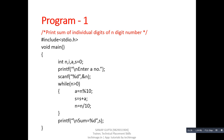Let's understand the while loop with the help of a program. In this slide, the program explained is the sum of individual digits of an n-digit number. The user can enter a number containing any number of digits — for example, 123 contains three digits: 1, 2, 3, and 1234 contains four digits. This program will find the sum of all digits. For example, if the number is 123, the output will be 6, that is 1 plus 2 plus 3 equals 6. A scanf will read this number from the user.